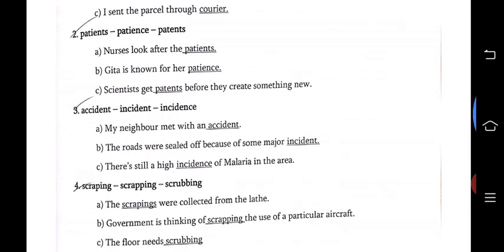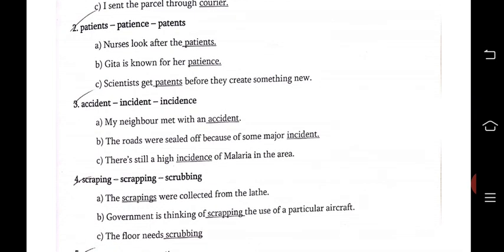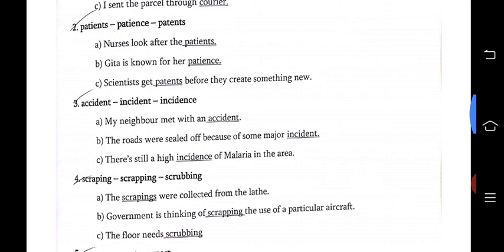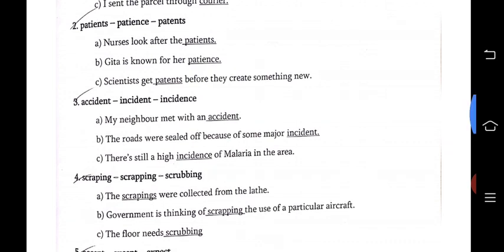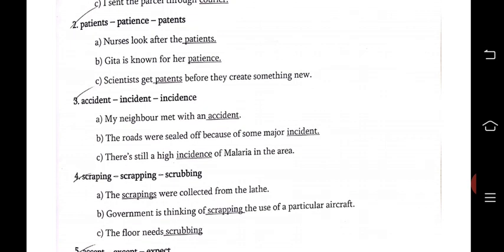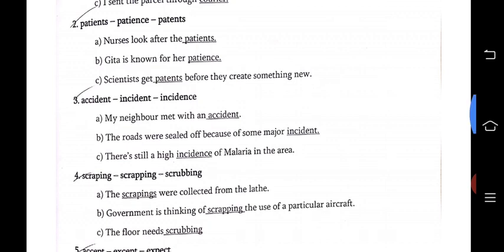Next: accident, incident, incidence. My neighbour met with an accident. The roads were sealed off because of a major incident. There is a high incidence of malaria in the area. Here, incidence means the occurrence, rate, or frequency of a disease, crime, or other undesirable thing. Underline and write it — occurrence, rate, or frequency of disease, crime, or other undesirable thing.